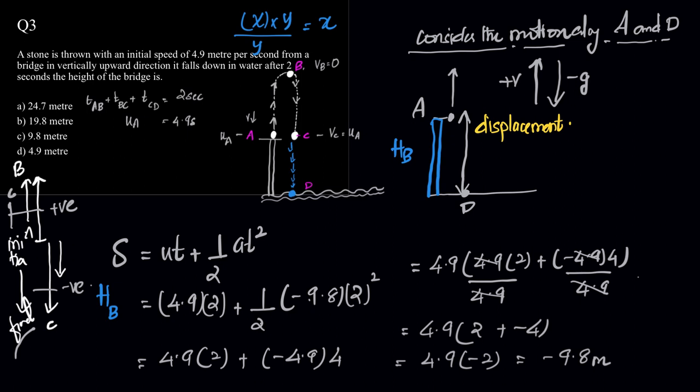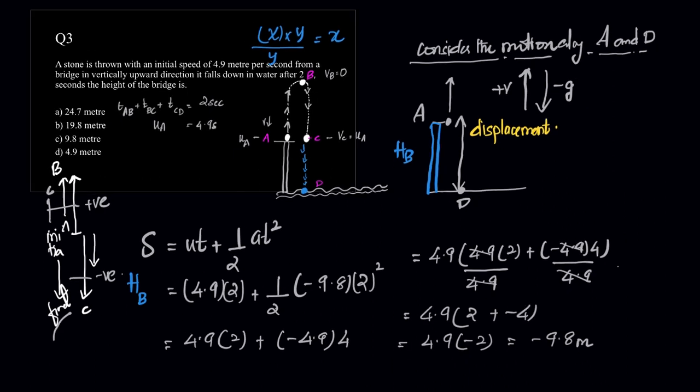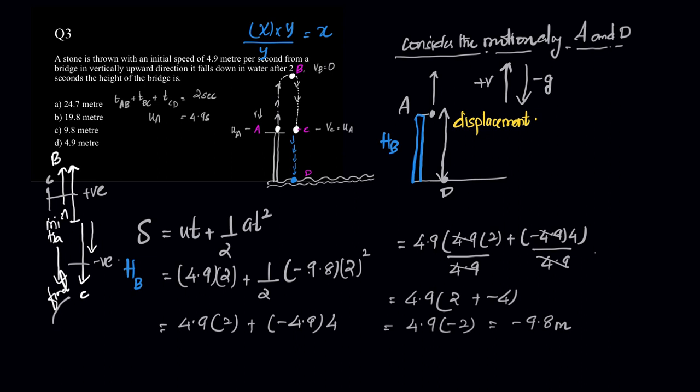So the magnitude of displacement is minus 9.8, which means the displacement is given to be minus 9.8, which means the magnitude of displacement, which is the length alone, is 9.8 meters. Simple. What is the length alone? The length alone is height of the bridge. So the correct option would be option C.